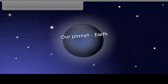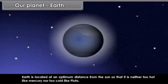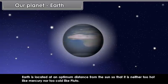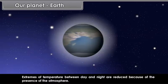Our planet Earth. Earth is located at an optimum distance from the Sun, so that it is neither too hot like Mercury nor too cold like Pluto. Extremes of temperature between day and night are reduced because of the presence of the atmosphere.